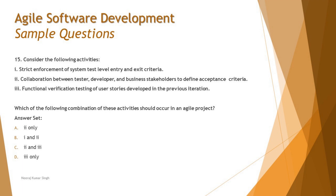The activities listed are: one — strict enforcement of system test level entry and exit criteria; two — collaboration between developer, tester, and business representatives to define a feature as done; and three — functional verification testing of user stories developed in the previous iteration. Activity two sounds absolutely correct because system testing finalizes the user story, and collaboration between all team members aligns with the whole-team approach in agile.